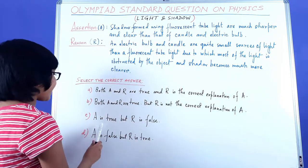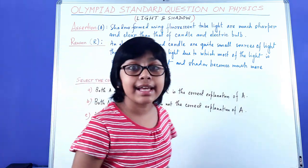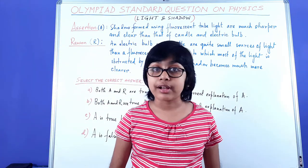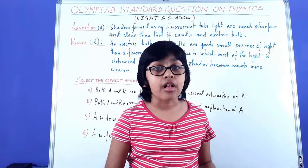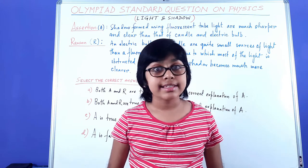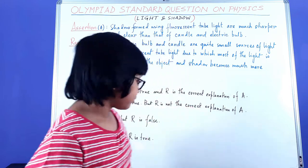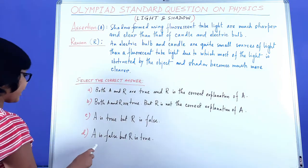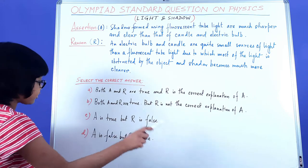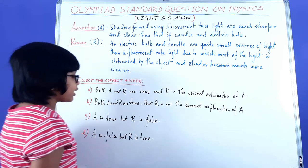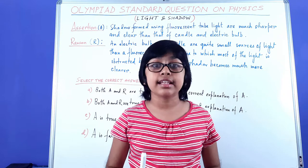Next we have: A is true, but R is false — meaning the assertion is true and the reason is totally wrong, so there isn't any relation between them. Finally, the last option: A is false, but R is true — the assertion is false and the reason is true.